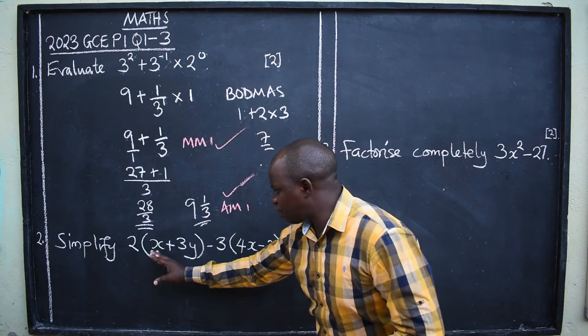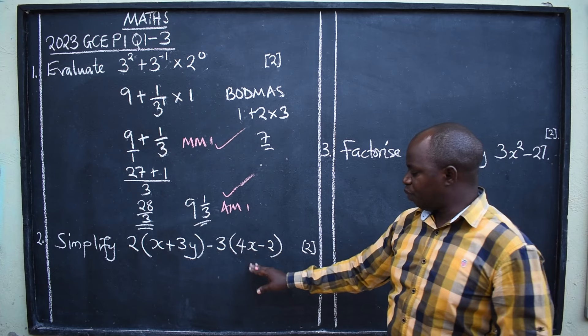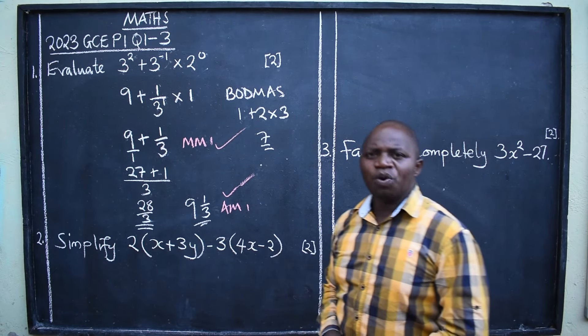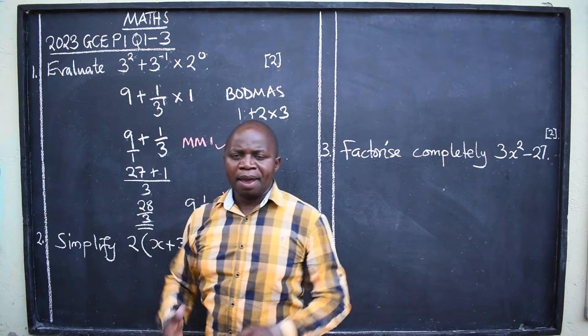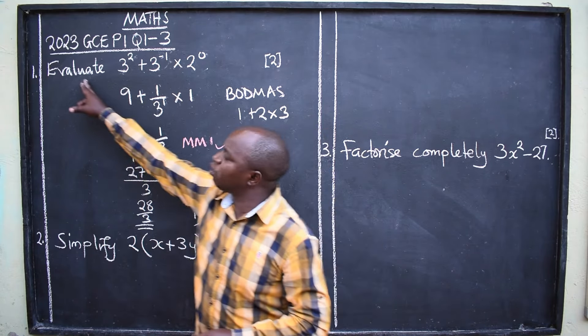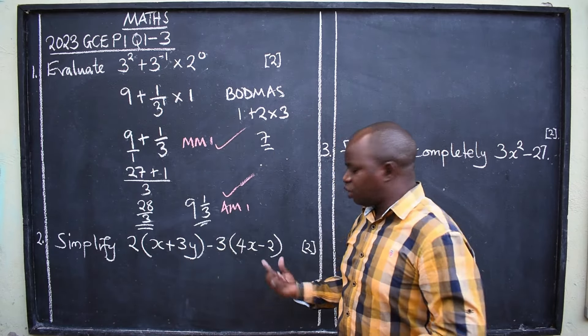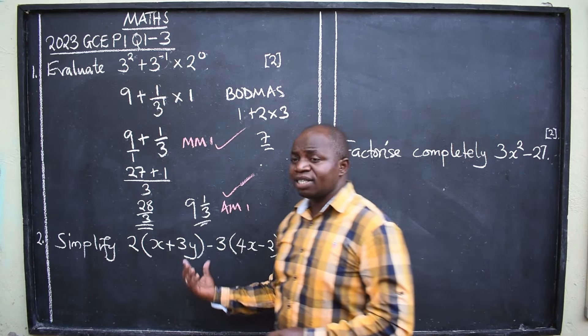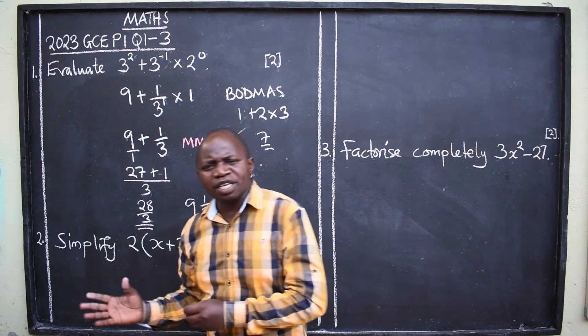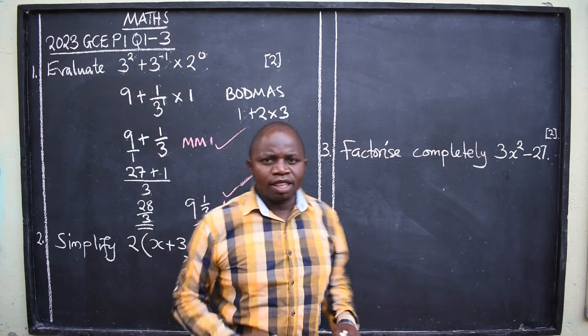We move on to the second question. Simplify 2(x + 3y) - 3(4x - 2). Two marks given. What are you doing here? You are simplifying. You are shortening the number of terms. You are not evaluating. You are shortening the number of terms. What topic is this? This is algebra now. You're saying, oh, under algebra there's grouping, collection of like terms, all those things will come in. Then you start.